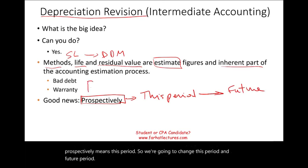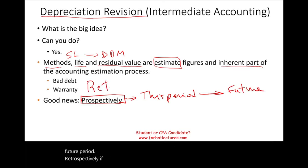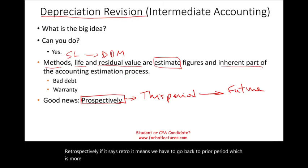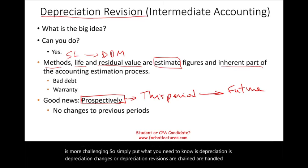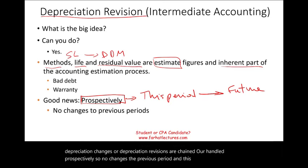Retrospectively — if it says retro — it means we have to go back to prior periods, which is more challenging. Simply put, depreciation changes or depreciation revisions are handled prospectively. So there are no changes to previous periods. This is easy and simple, versus going back and changing prior periods.